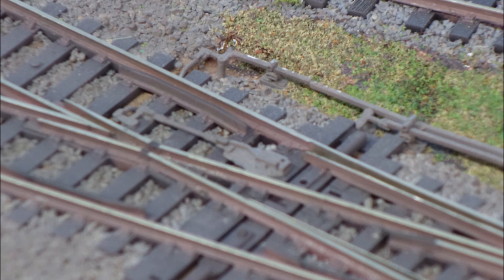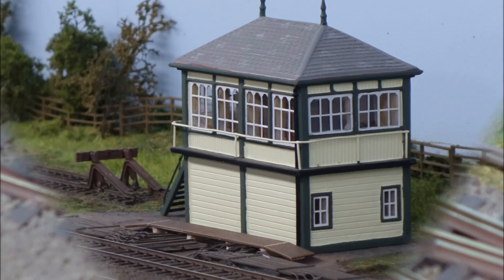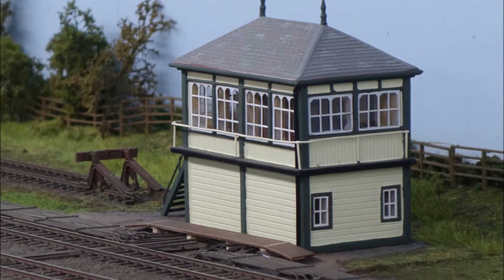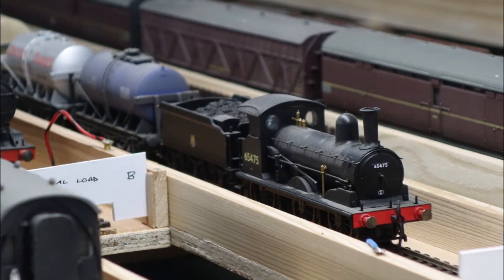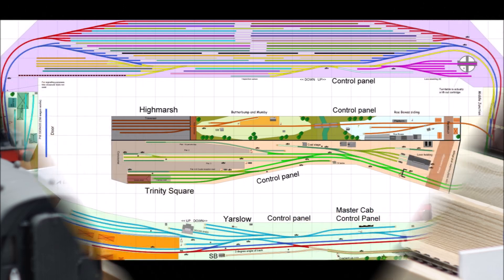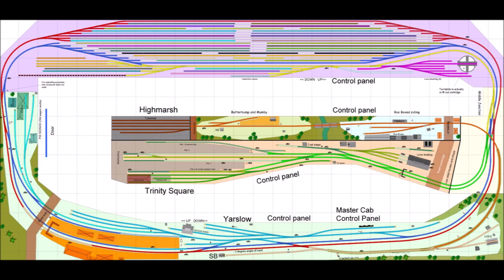Lock was all about locking points and signals together and locking points so that they couldn't be changed once a train was trying to run over them. Block was all about block instruments separating trains from each other on the track. And brake was about having continuous brakes on trains. Now we're not going to worry about the brake element here, but we are going to look at locks and blocks and particularly how the block bit relates to how we signal our layouts.